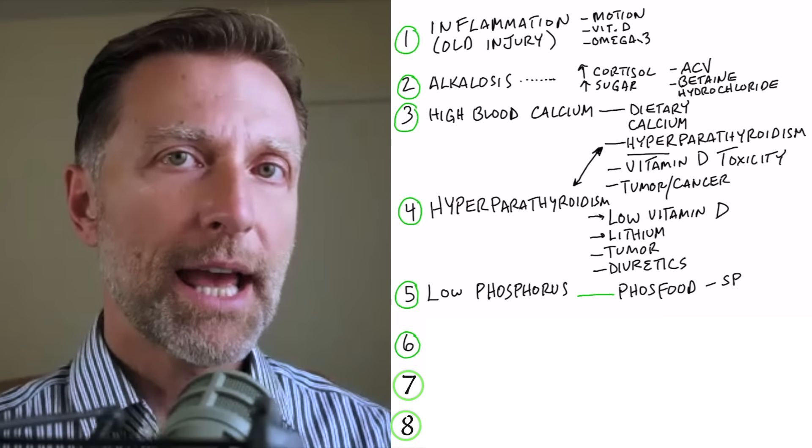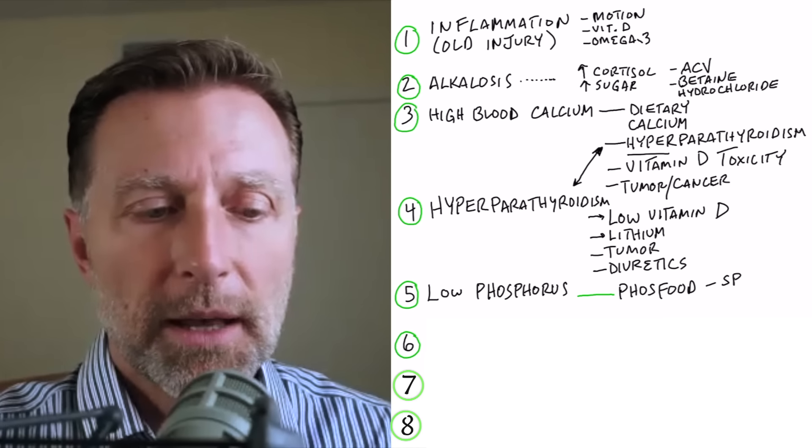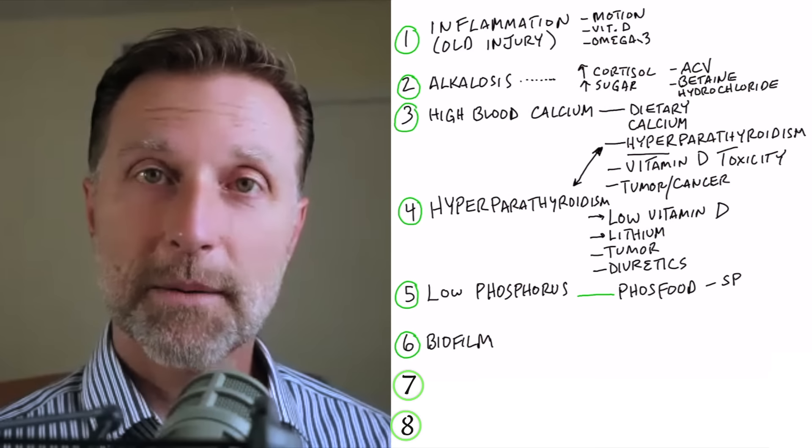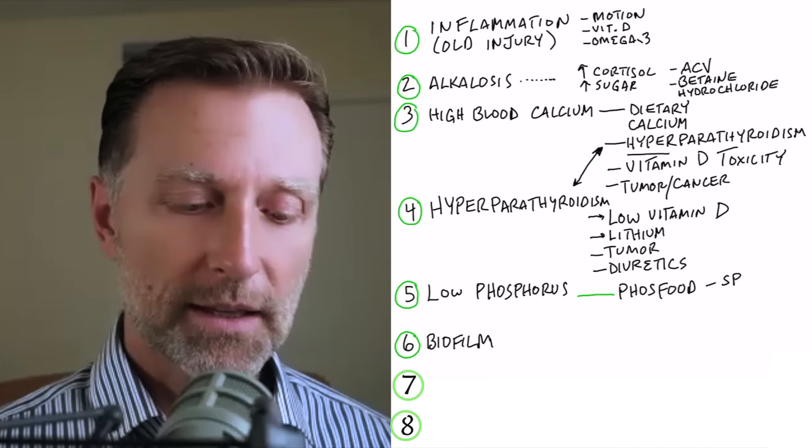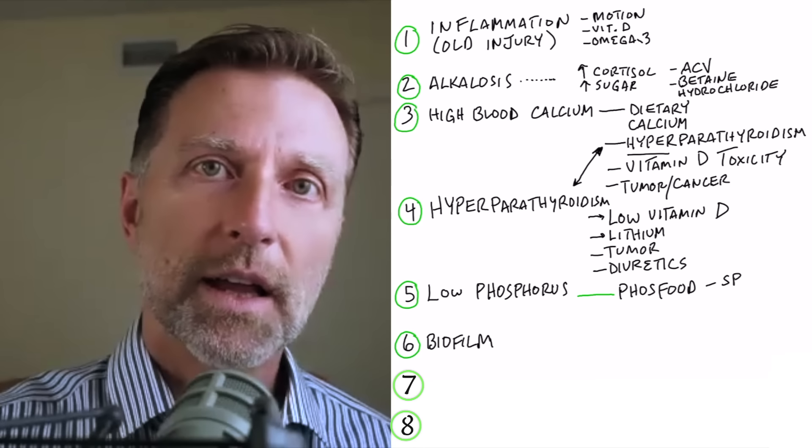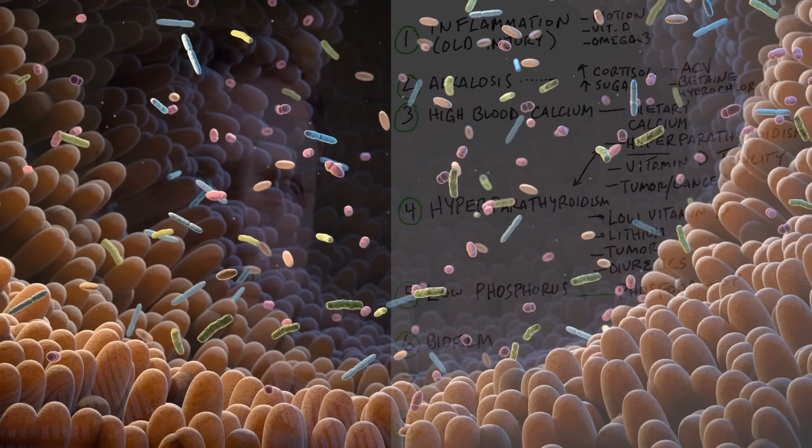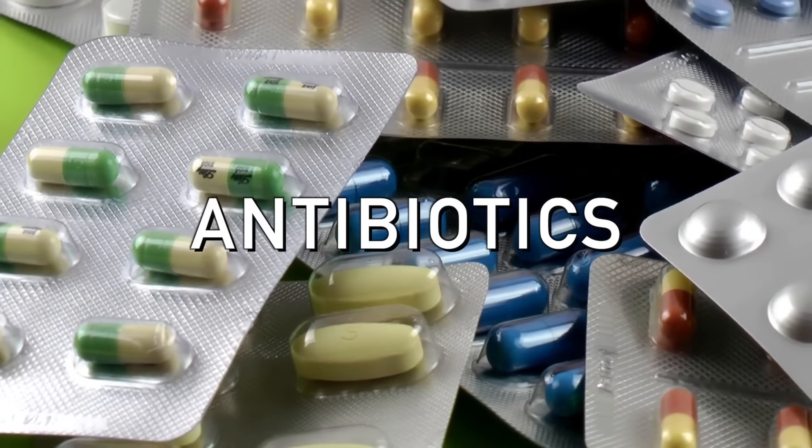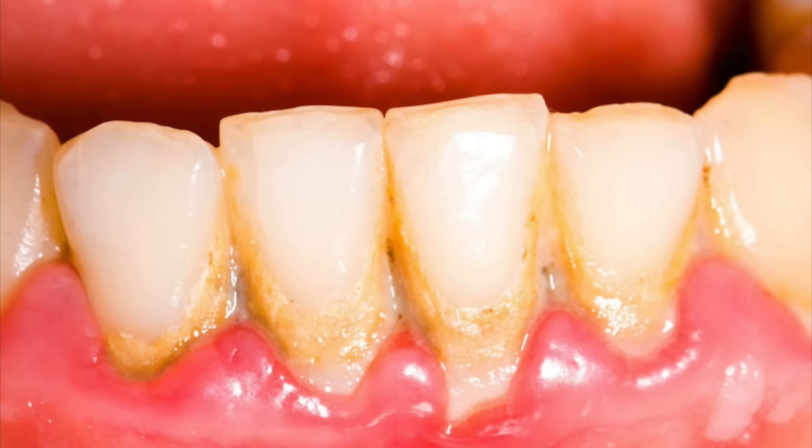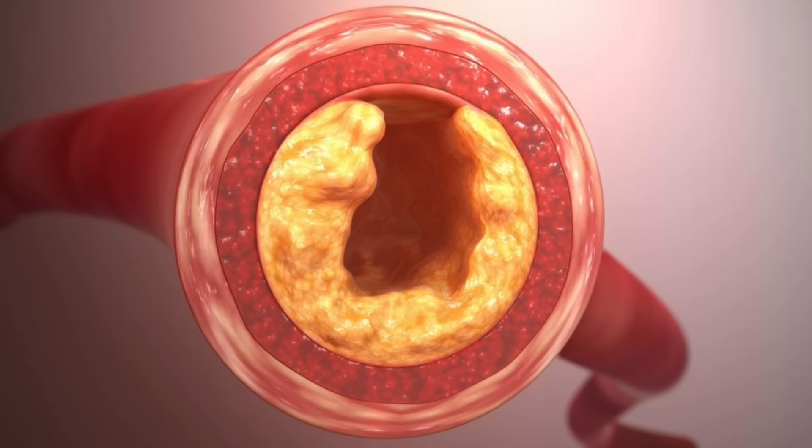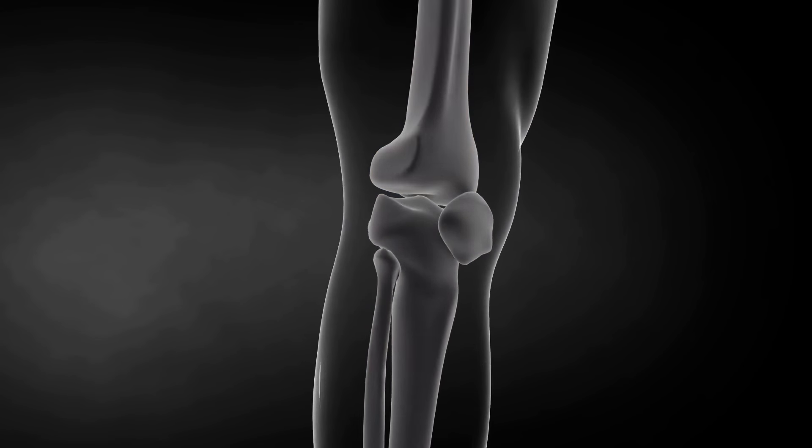And the last reason why you might have calcium deposits is biofilm. Now, what are biofilms? Biofilms are little small igloos that microbes make to hide from you. And so they can go underneath the radar. And it's kind of like a community of microbes that have band together to survive. And this is why antibiotics don't kill biofilms. You can have biofilms as tartar on your teeth. You can have biofilms in your arteries as plaquing on the arteries. You can also have biofilms in your joints.